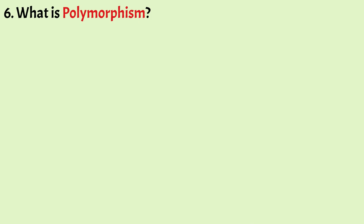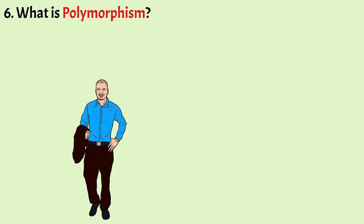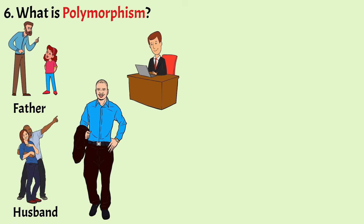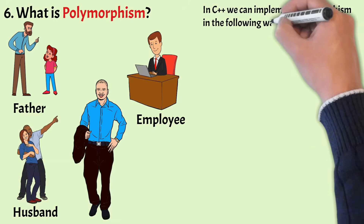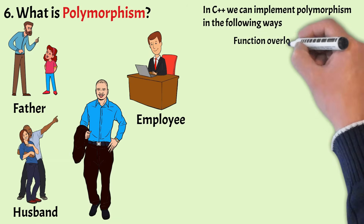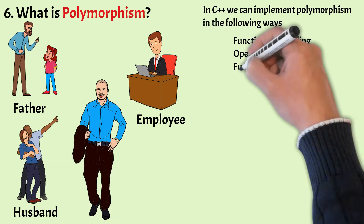What is polymorphism? In simple terms, polymorphism means more than one form, which means that an entity behaves differently in different situations. For example, a man possesses different behavior in different situations — he can act at the same time like a father, a husband, or an employee. In C++, we can implement polymorphism in three ways: function overloading, operator overloading, and function overriding.